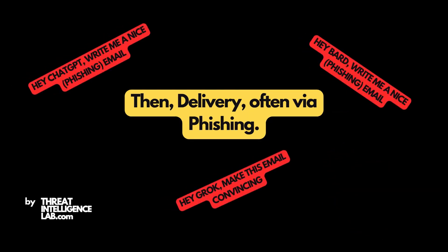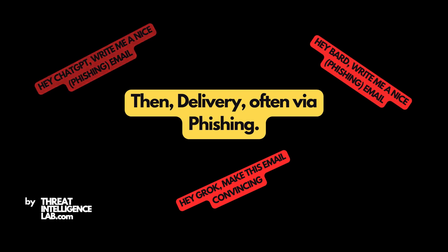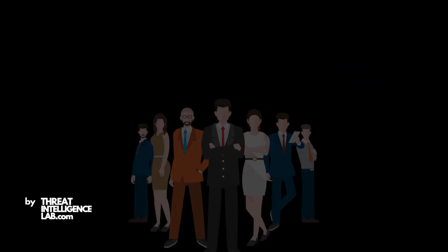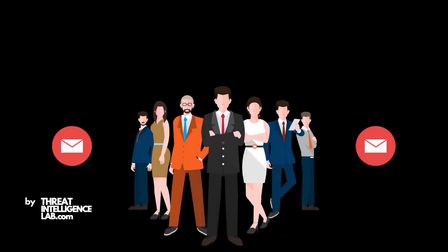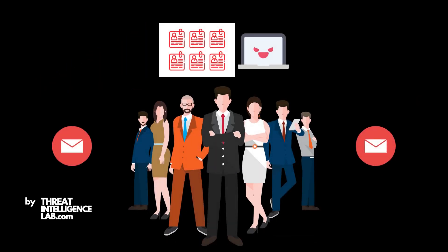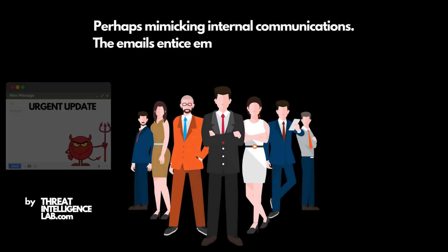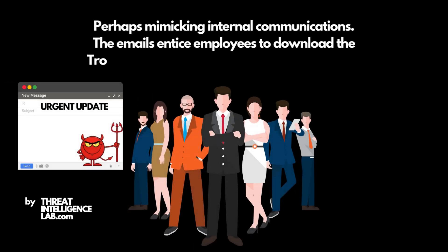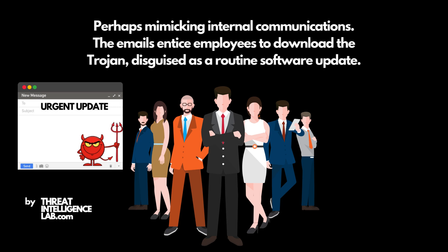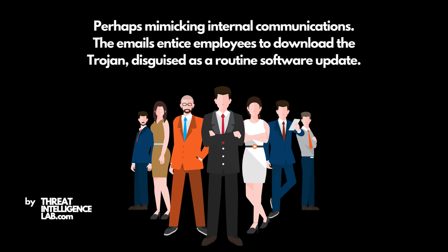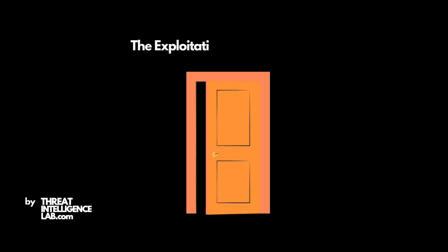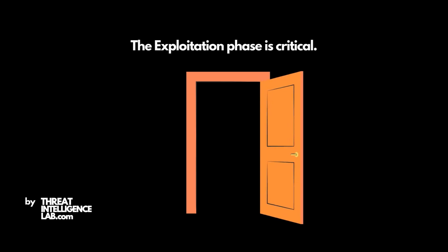Then delivery, often via phishing. The hacker sends spear phishing emails to selected employees. These emails are carefully crafted, using gathered intel to appear legitimate, perhaps mimicking internal communications. The emails entice employees to download the Trojan, disguised as a routine software update.